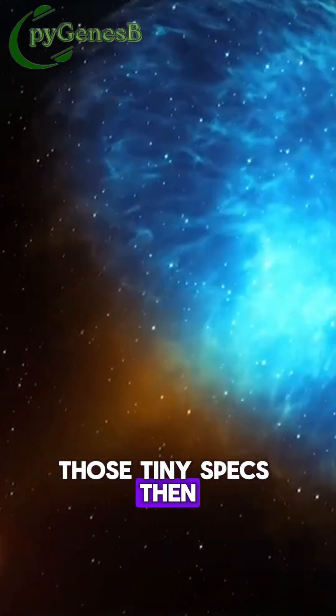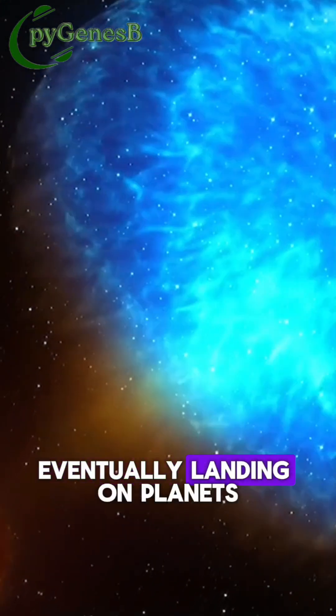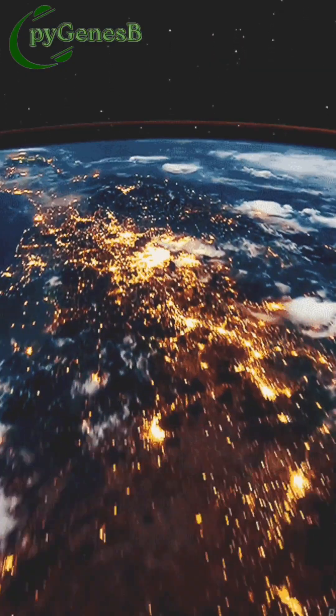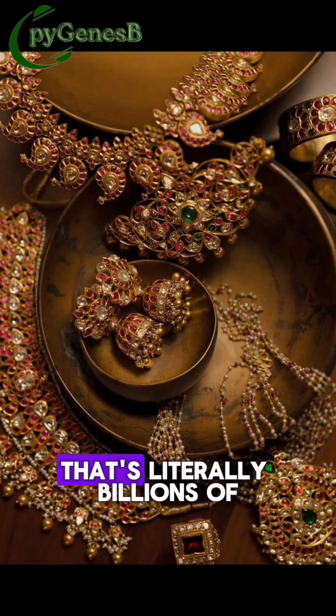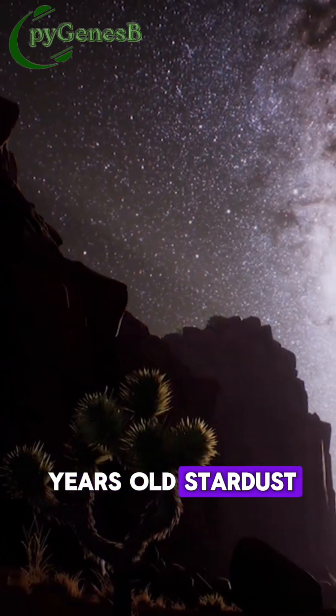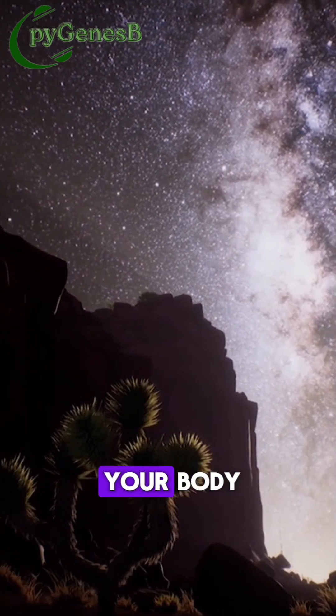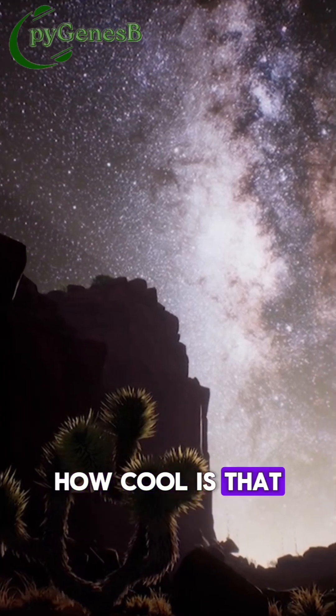Those tiny specks then float through space, eventually landing on planets like Earth. So the ring or chain you're wearing? That's literally billions of years old stardust. You're carrying a piece of the universe on your body. How cool is that?